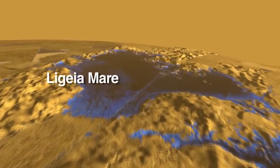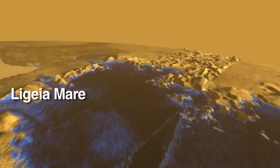Located near the north pole, Ligeia Mare is the second largest sea on Titan.